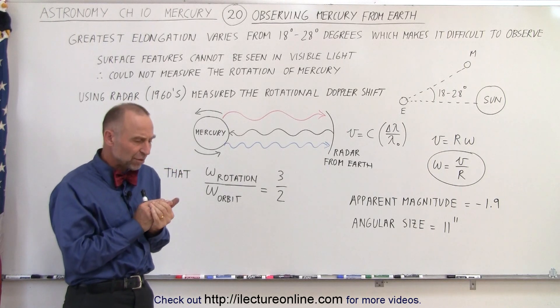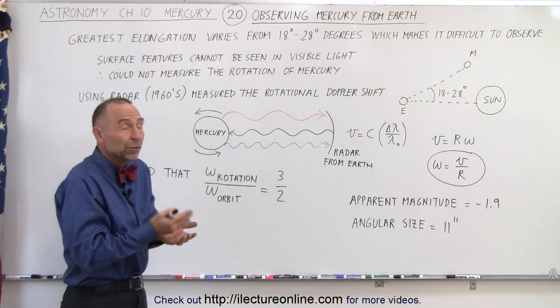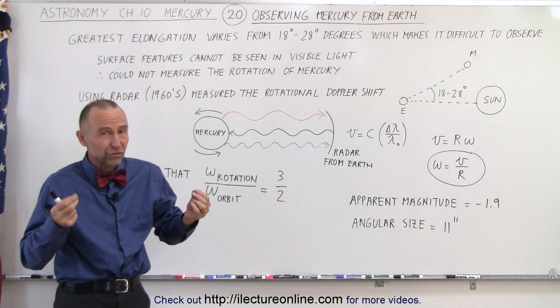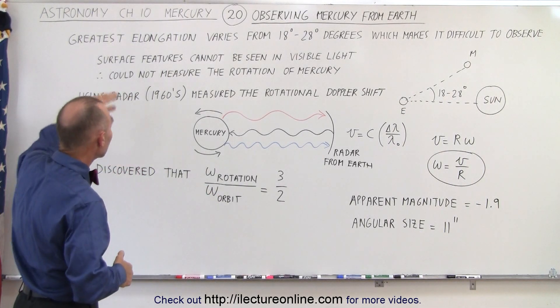which means we can only see it in the evening just for a little while right after sundown and in the morning a little while right before sunup, and so the conditions for seeing is not very good when it comes to Mercury. On top of that,